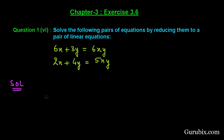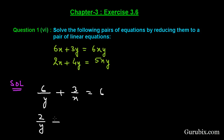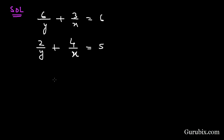Dividing equation 1 by xy, we get 6 over y plus 3 over x equals 6. Similarly, if we divide the second equation on both sides by xy, it becomes 2 over y plus 4 over x equals 5.